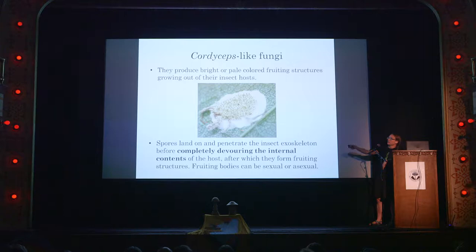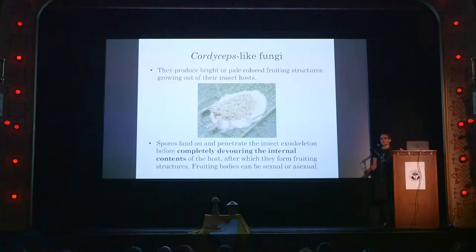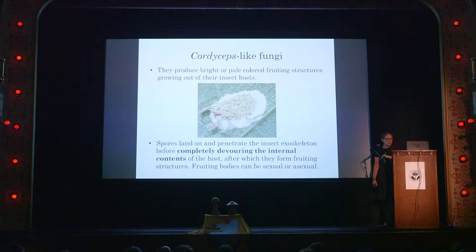They typically produce either whitish, pallid, or light yellow fruiting structures, or they can be really brightly colored. Sometimes they produce a stroma with a large stipe, and other times they form just a pad of perithecia on their host. Here we see a spider with all the legs coming out, and these are tons of little perithecia fruiting from this little spider. The idea is that this cordyceps lands on this poor little spider and completely devours the inside of the host before forming this typically elaborate fruiting body — either sexual perithecia or asexual conidia.